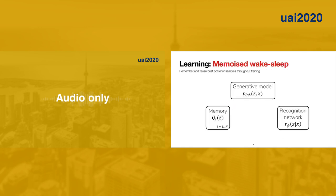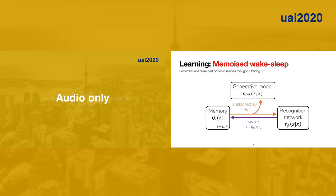This motivates memoized wake sleep. The main idea is to introduce a memory: for each data point, we store a set of latent variables which explain that data point well and update this set during training. This means we don't need to rely on the recognition network to produce good samples. In the wake phase, we propose latent variables from the recognition network and, according to their probability under the generative model, incorporate them into the memory. In the sleep replay phase, we sample latent variables from the memory and use these to update both the generative model and the recognition network.